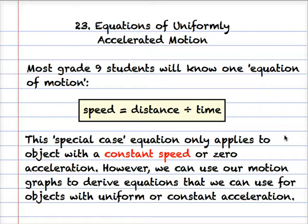The equations of motion that we're going to look at in this podcast are equations of uniformly accelerated motion, which means the objects are accelerating at a constant rate, like falling objects for example.